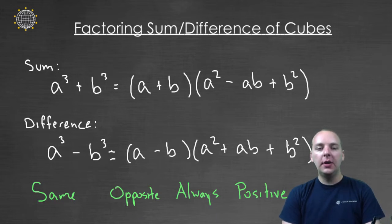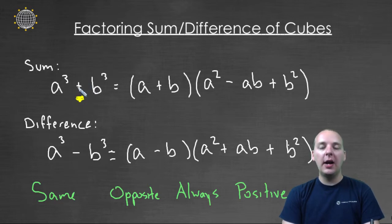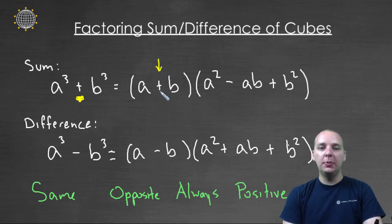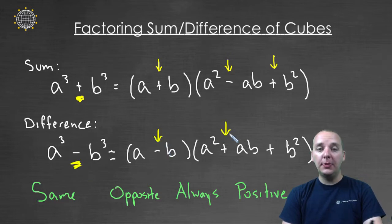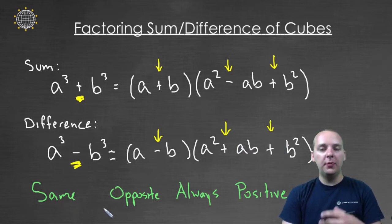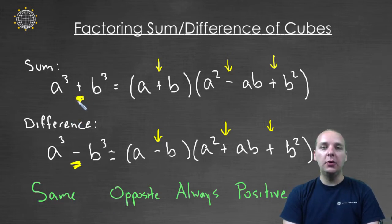Here's how SOAP works. For a sum of cubes, because it's a sum we're adding A cubed and B cubed, the signs go: same sign — it's a plus — then the opposite sign, and then always positive. For a difference of cubes, we have the same sign — a minus — then the opposite sign being a plus, and then always positive. SOAP: same, opposite, always positive.